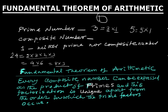Now, the Fundamental Theorem of Arithmetic states: every composite number can be expressed as a product of primes, and this factorization is unique apart from the order in which the prime factors occur.